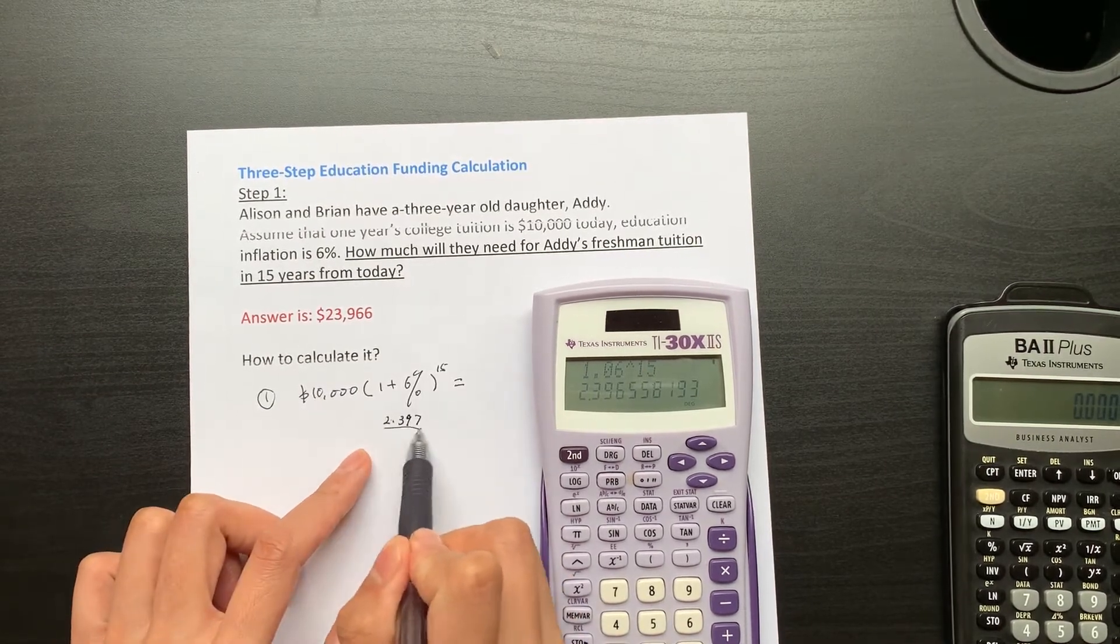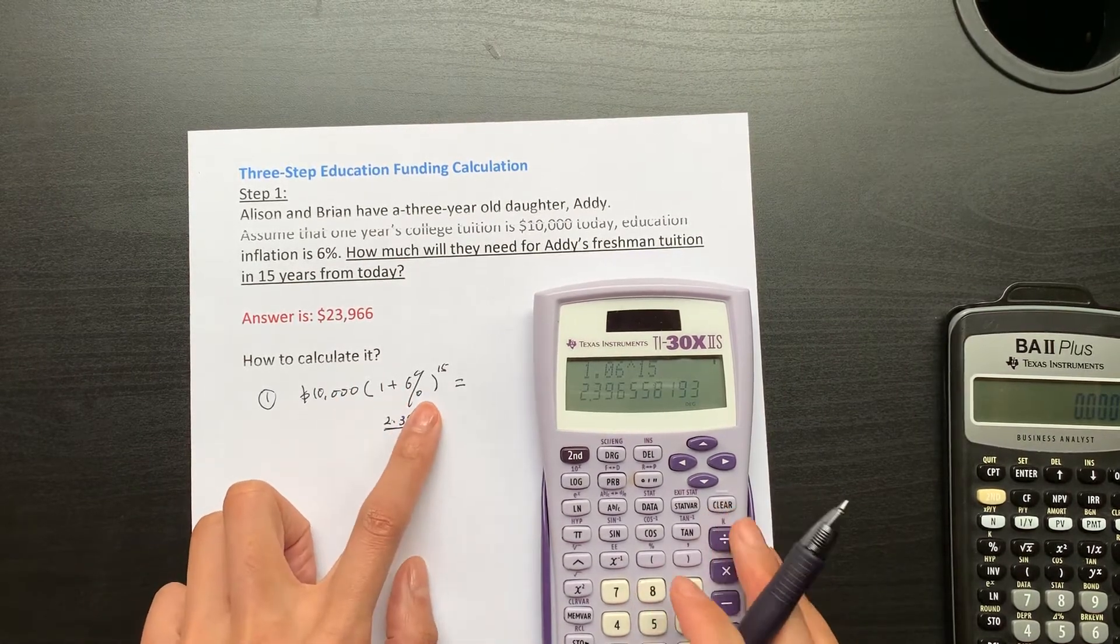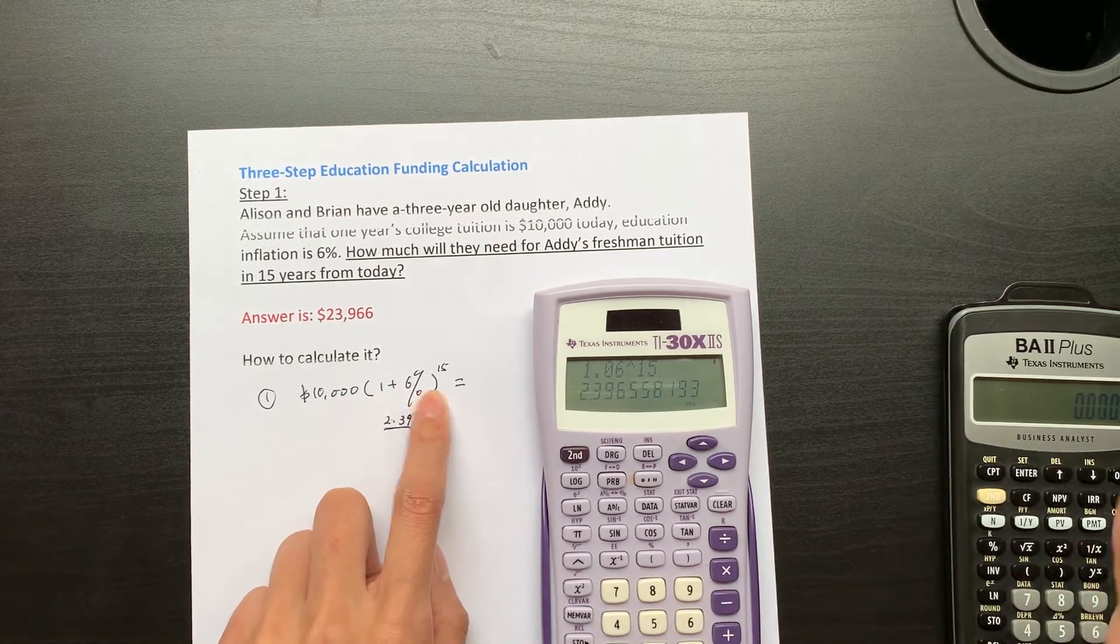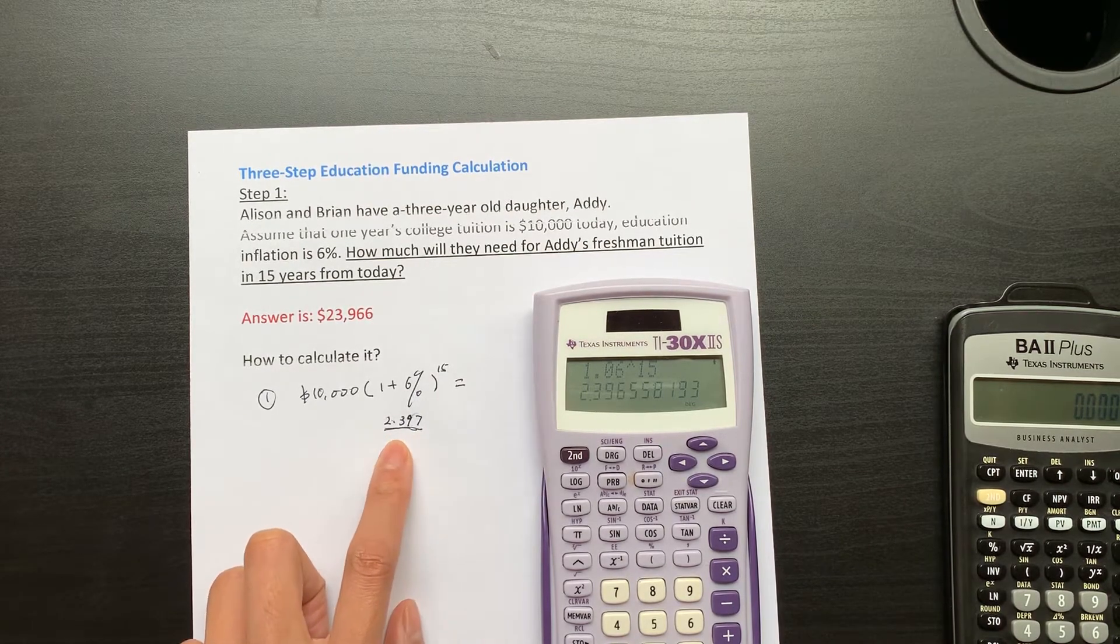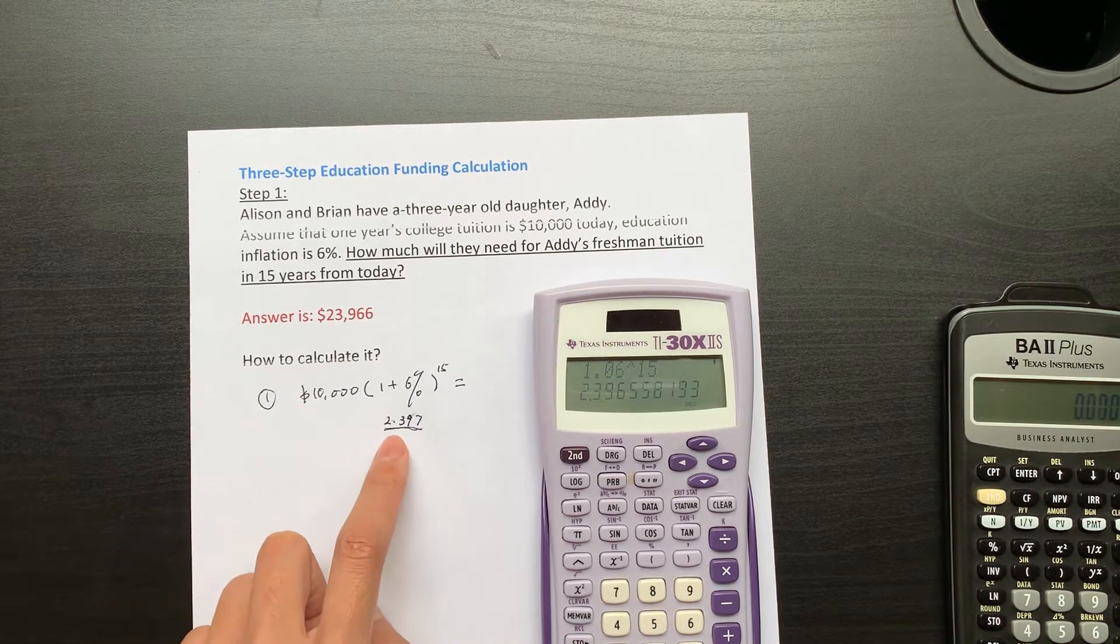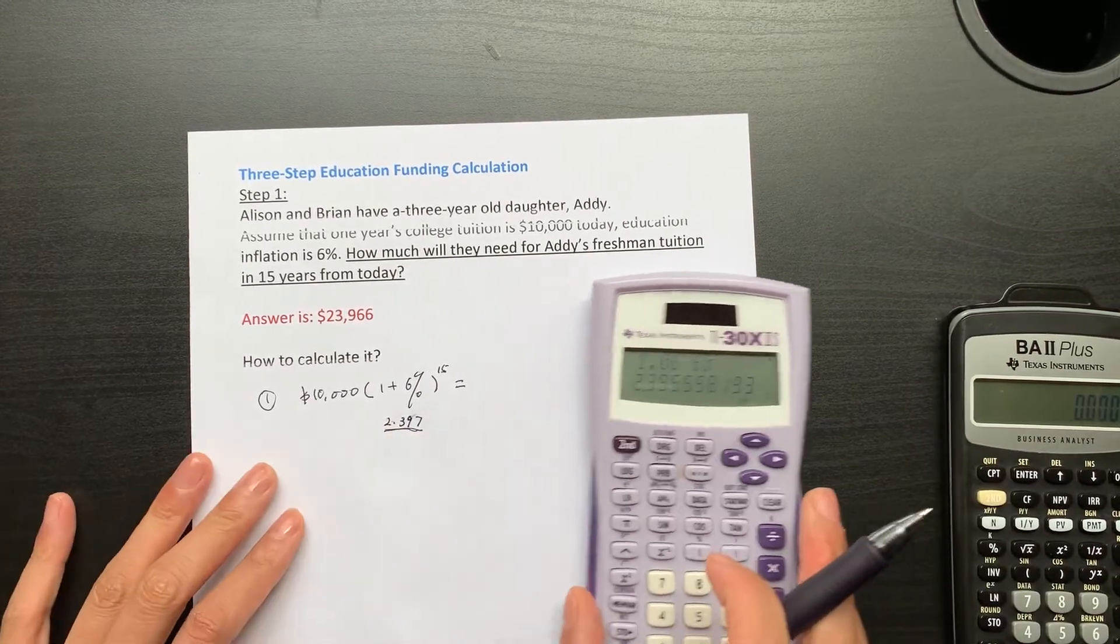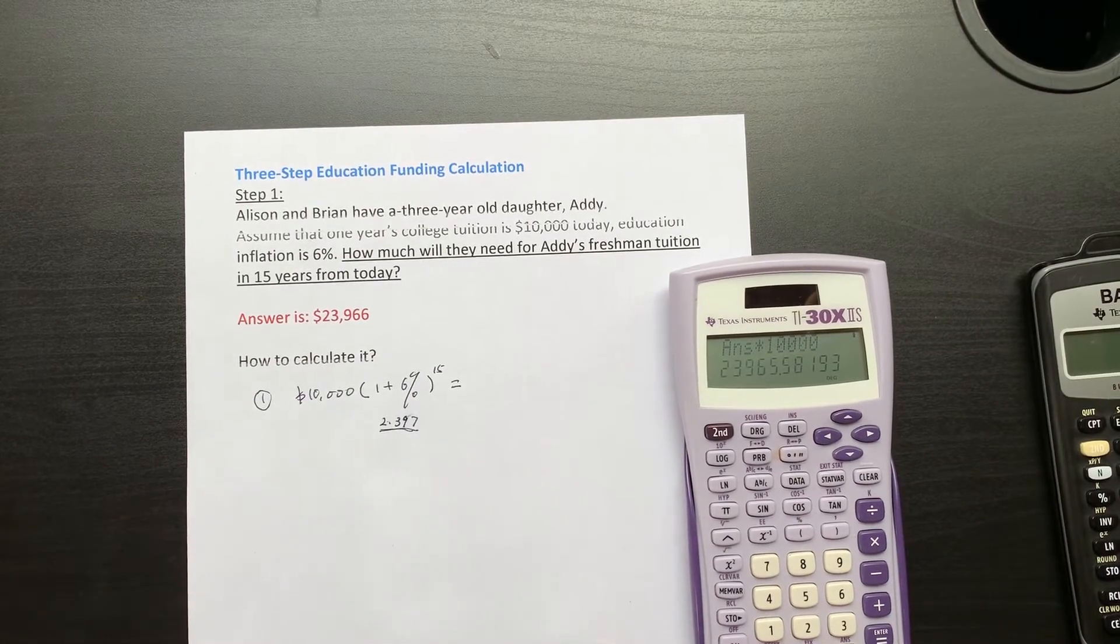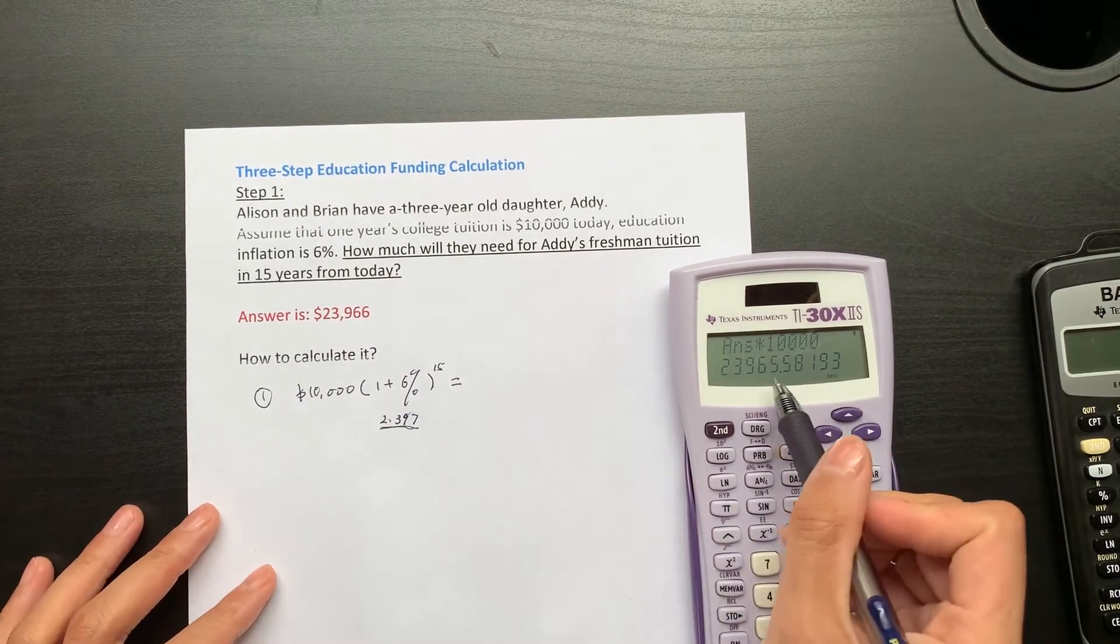So if the inflation is 6% per year, compounding every year for 15 years, that will be 2.397. What does this mean? This means the tuition will increase 2.3 times. So if you multiply $10,000 by 2.3, the inflation increase gives you $23,966.